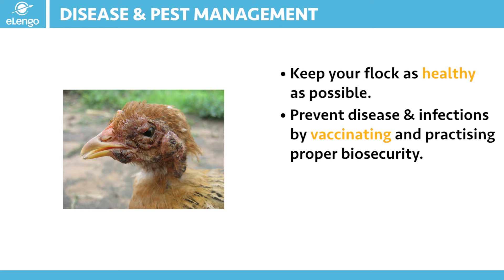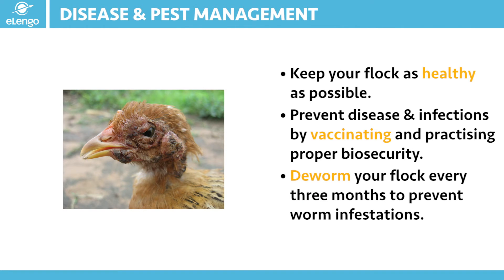External parasites — that is fleas, mites, and lice — can be controlled by maintaining cleanliness around the compound and within the poultry house. Poultry dusts can be used where the need arises. Internal parasites like worms are controlled using dewormers. Have a routine of deworming your birds every three months so as to keep the pressure as low as possible.